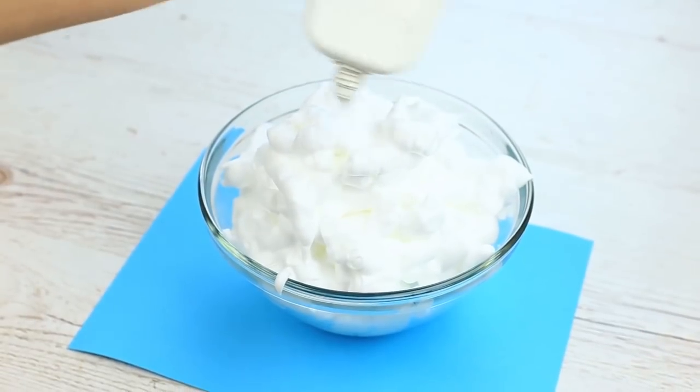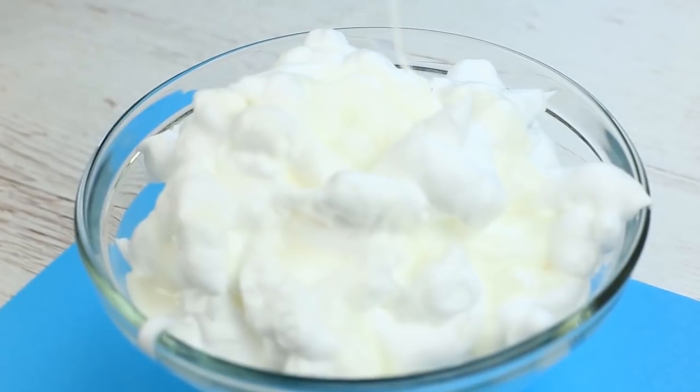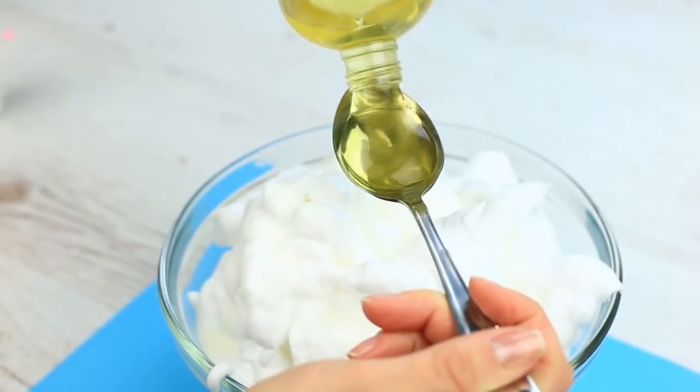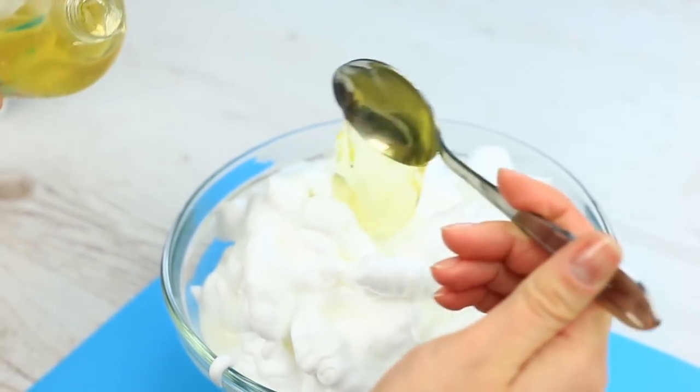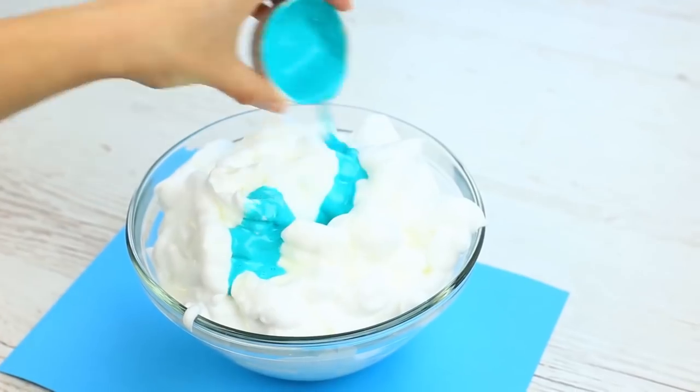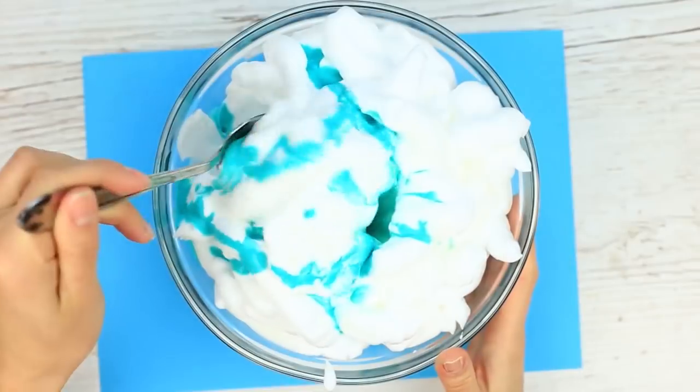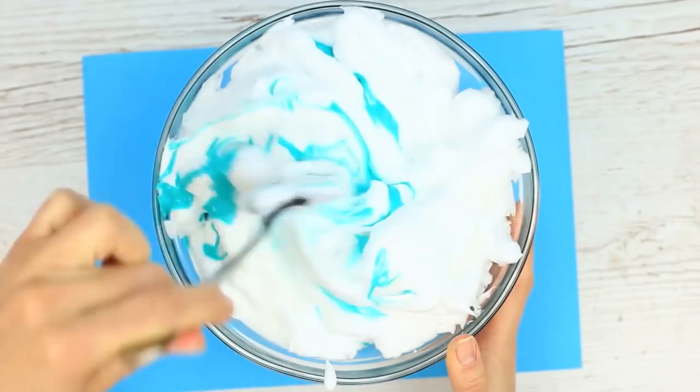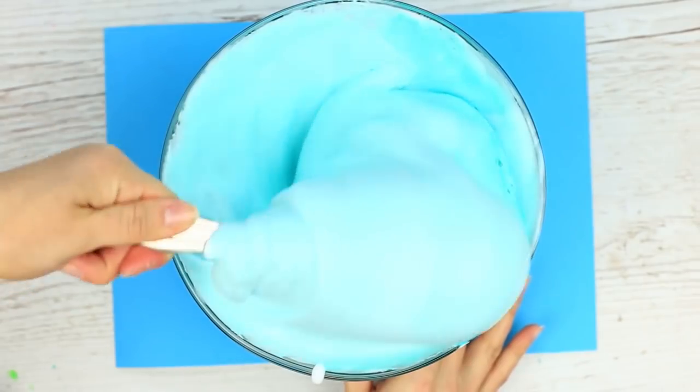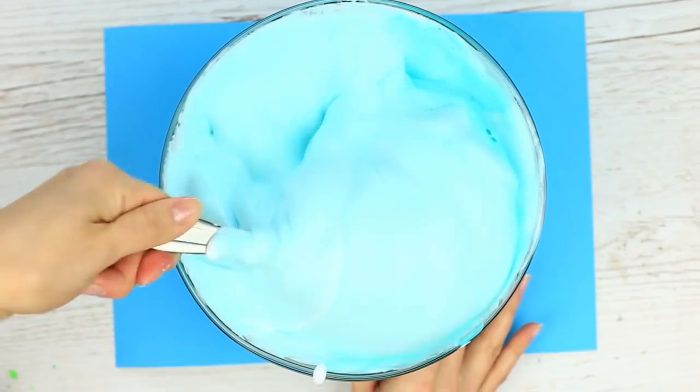Add one and one-third ounces of white glue. Two to three tablespoons of the transparent shower gel. Add acrylic paint. You can use gouache or food coloring instead. Mix until smooth. It's a magical color. It looks like whipped cream.